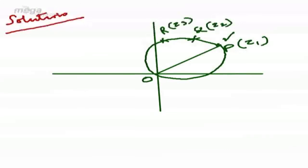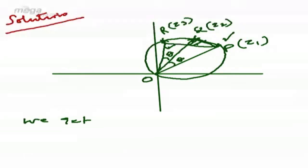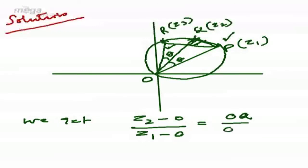Q and R are points in the same semicircle, so angle OQP = 90° and angle ORP = 90°. The angle POQ is given as theta and angle QOR is also theta. Applying Euler's theorem, we rotate the complex vector OP in the direction of OQ by angle theta: Z2/Z1 = (OQ/OP) · e^(iθ). Similarly, rotating OQ toward OR by theta: Z3/Z2 = (OR/OQ) · e^(iθ).